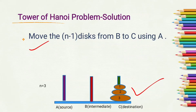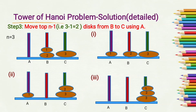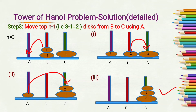This is our final answer. To perform step three: first move disk 1 from B to A, then move disk 2 from B to C, then move disk 1 from A to C. In this way we can place all disks on rod C such that all smaller disks are placed over the larger ones.